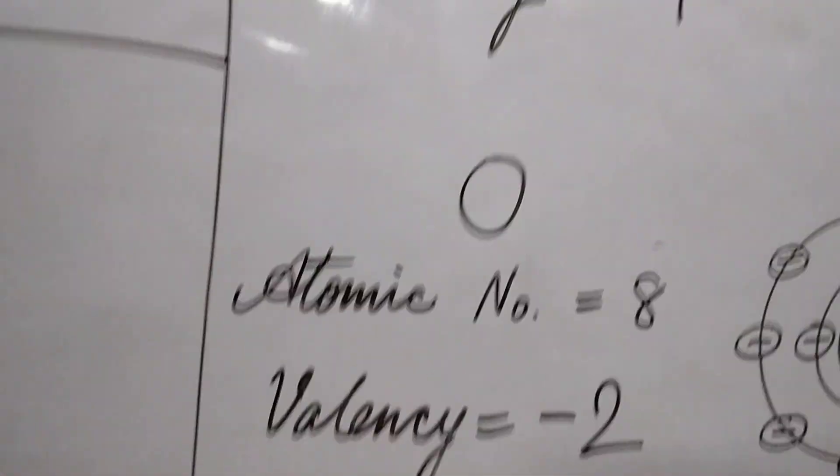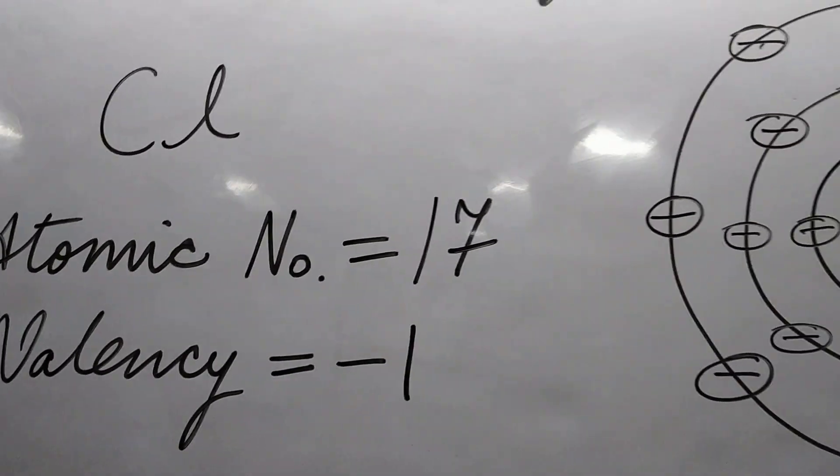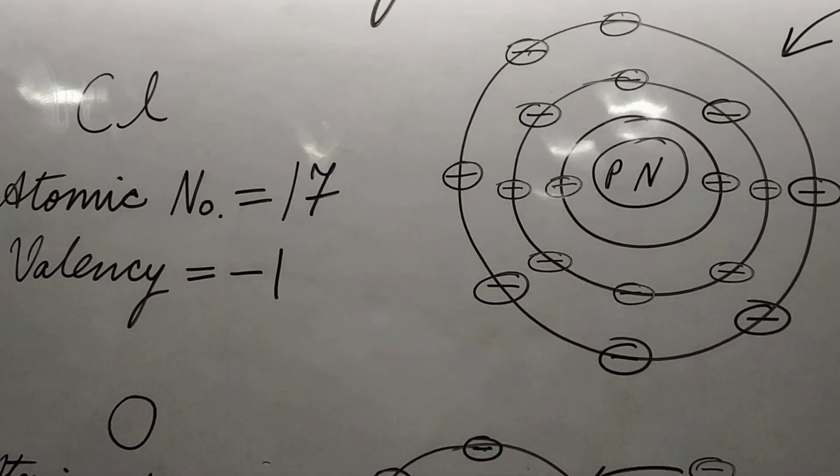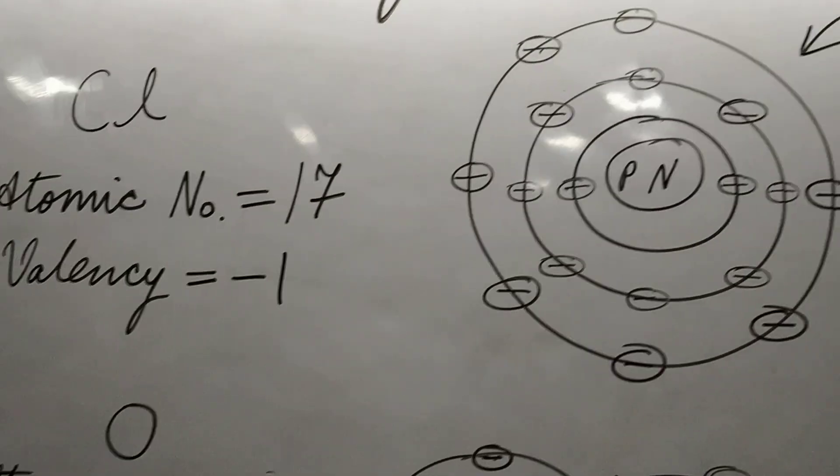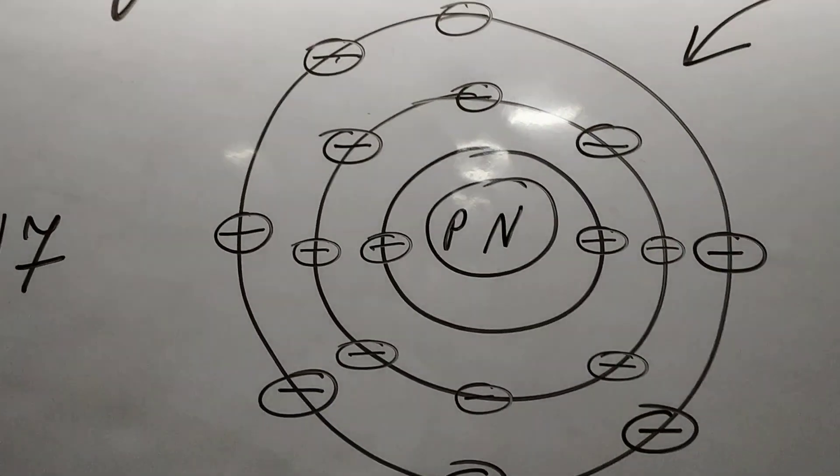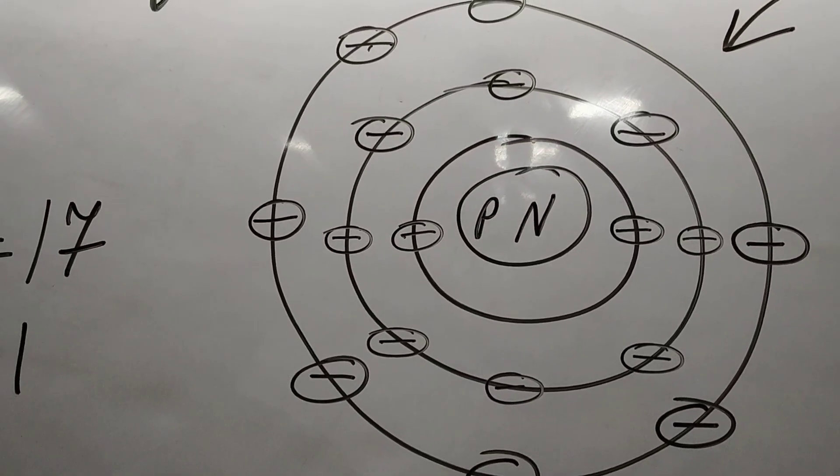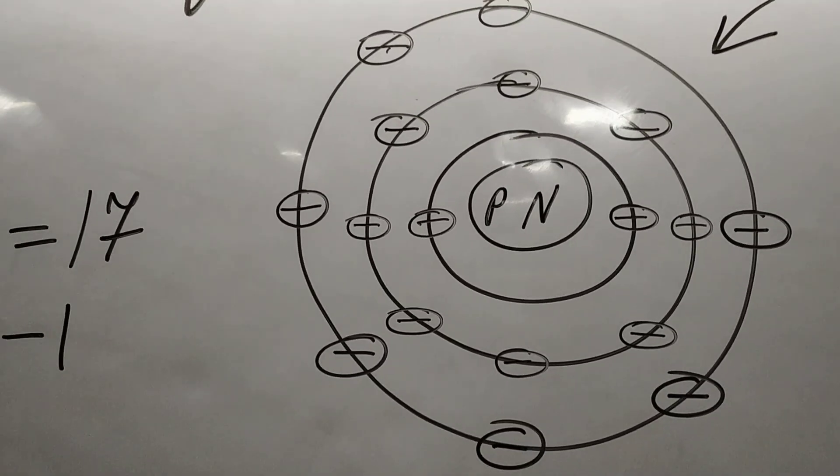Another example now, let us take chlorine. In chlorine the atomic number is 17. So the first orbit has two electrons, second has eight, eight plus two, ten, and the third one has seven electrons.